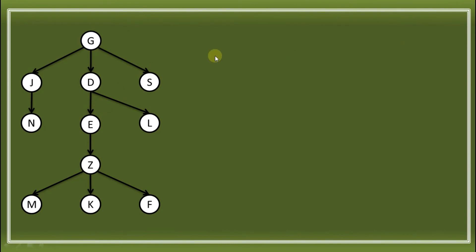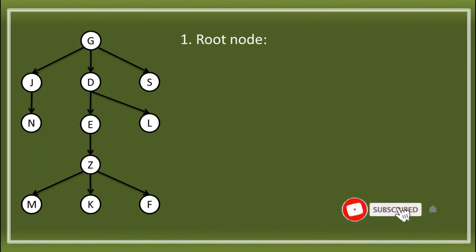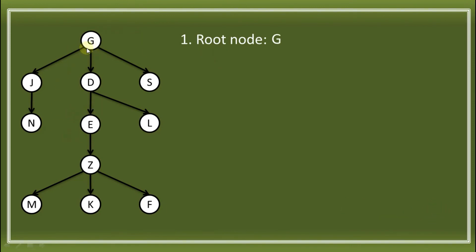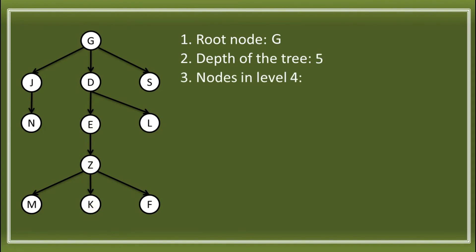Now let's try to answer some questions based on the given tree. First, identify the root node: the root node is G, because it is the topmost node. Next, the depth of the tree — the highest level — we have levels 1, 2, 3, 4, and 5, so the answer is 5. Next, nodes in level 4: that is the level containing specific nodes we can identify by counting down from the root.